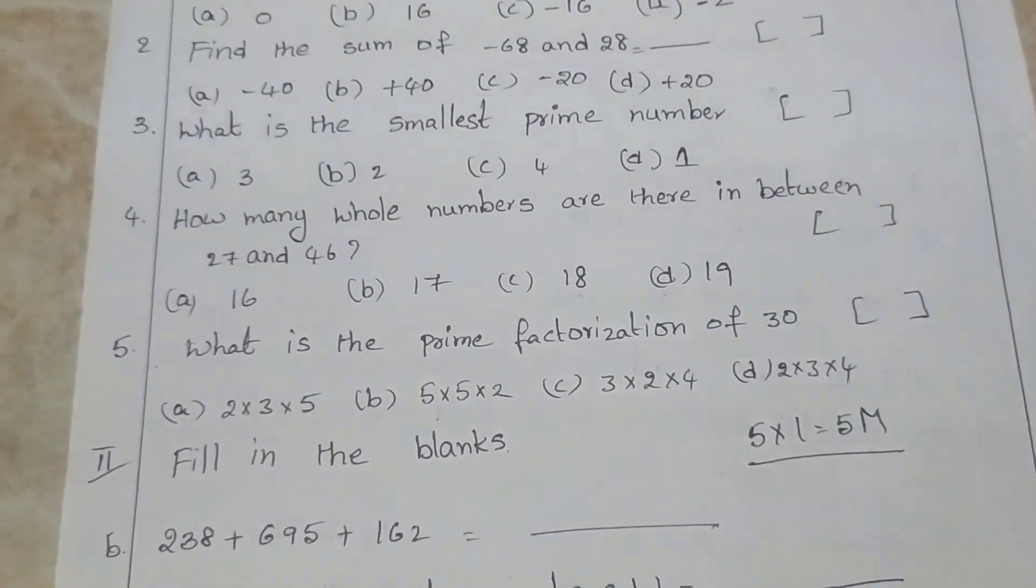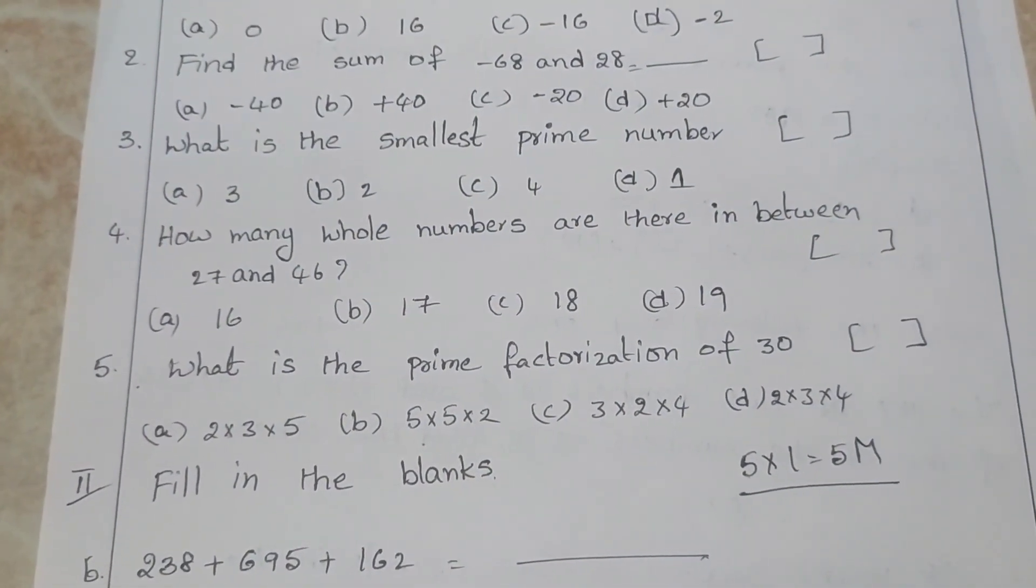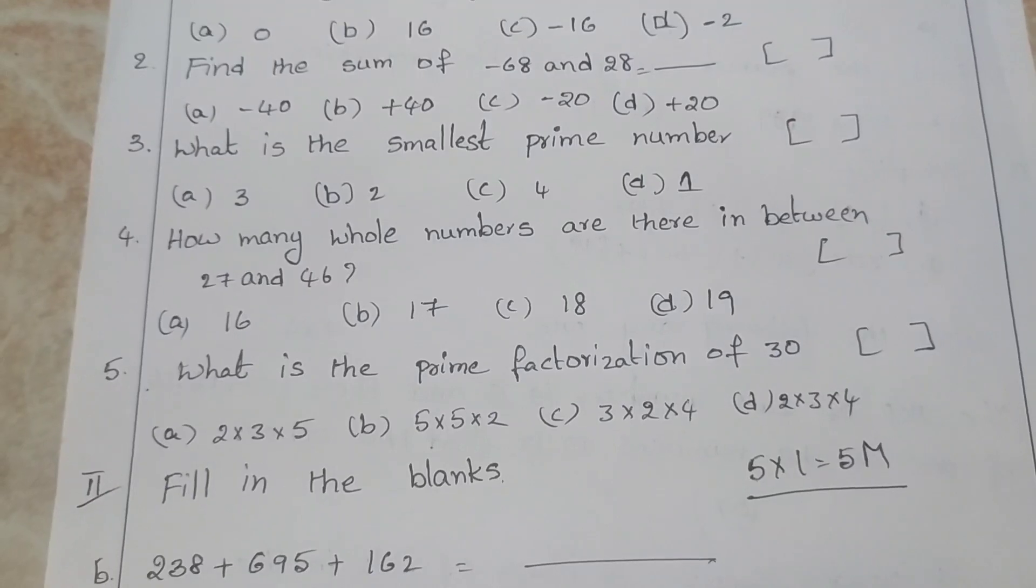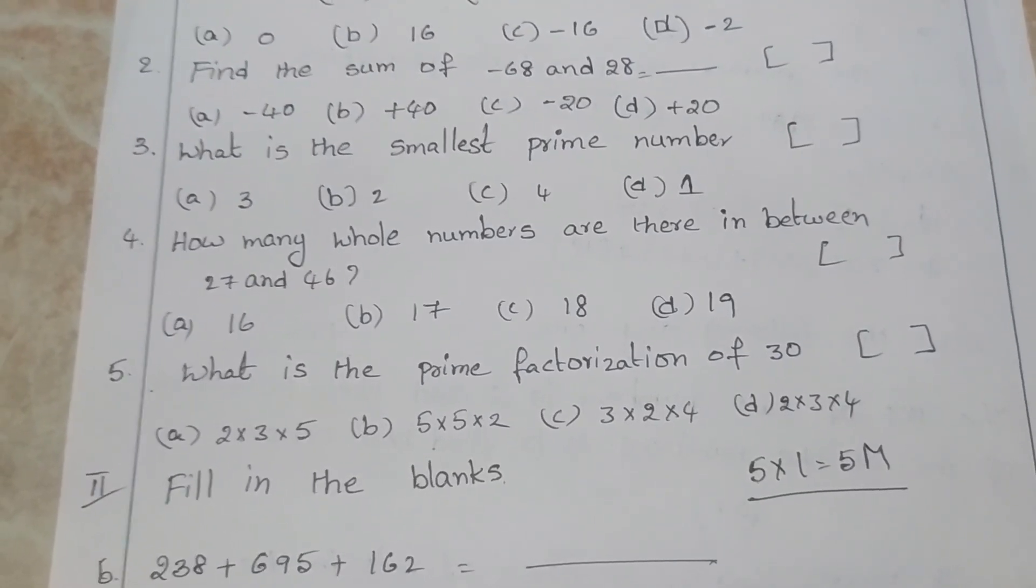How many whole numbers are there in between 27 and 46? 16, 17, 18, and 19.